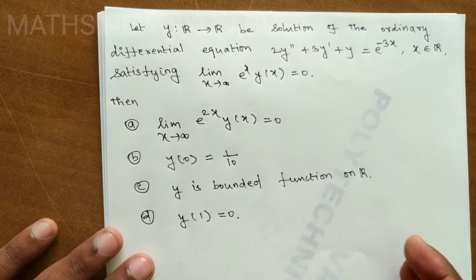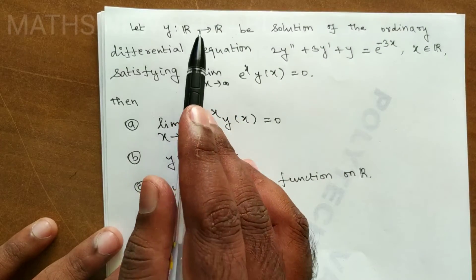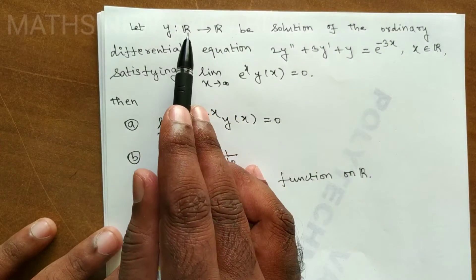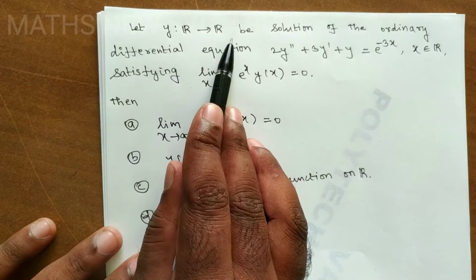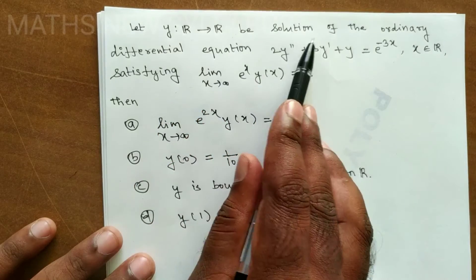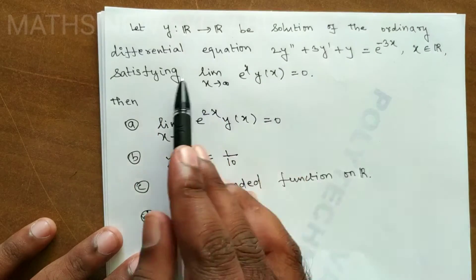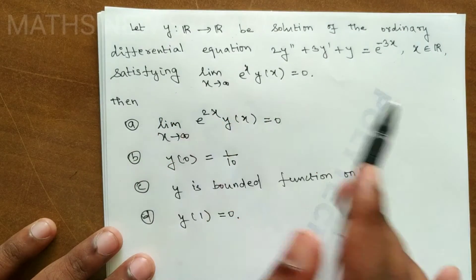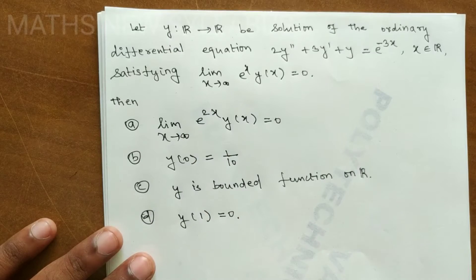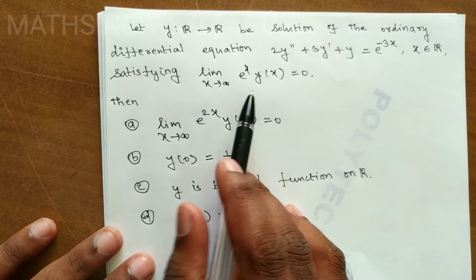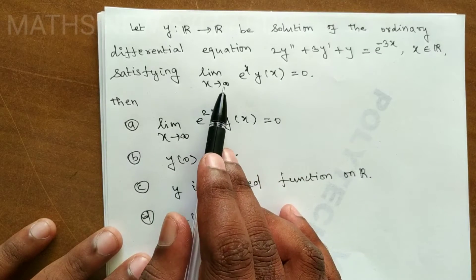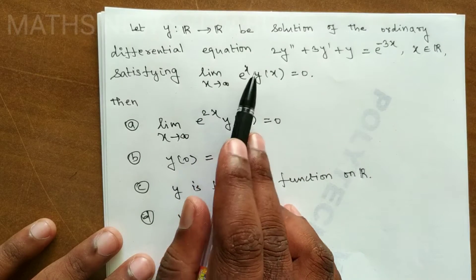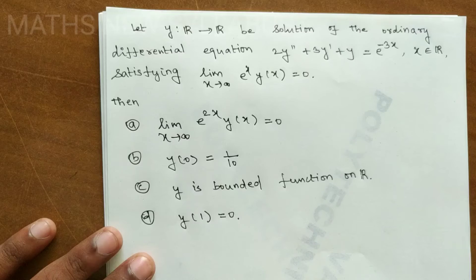This question is very simple. We need to find y. The given condition — limit as x tends to infinity of e^x · y(x) = 0 — is a clue.